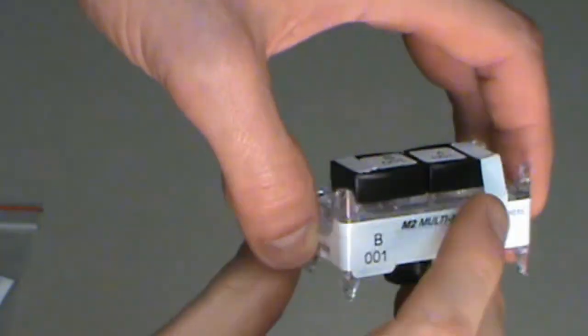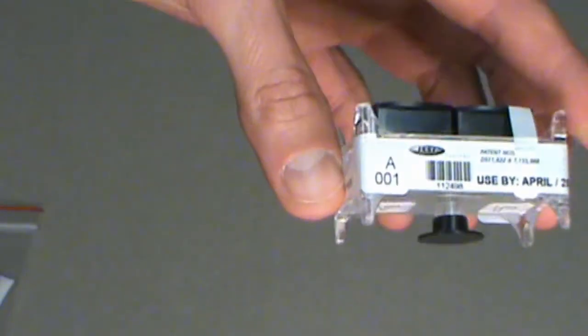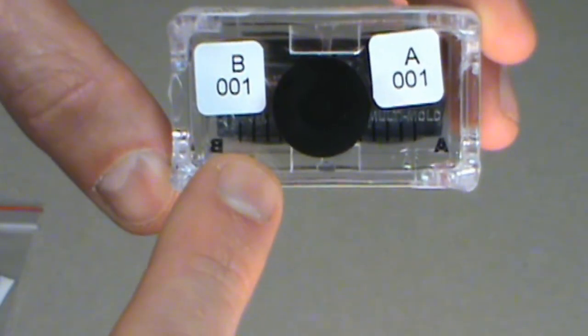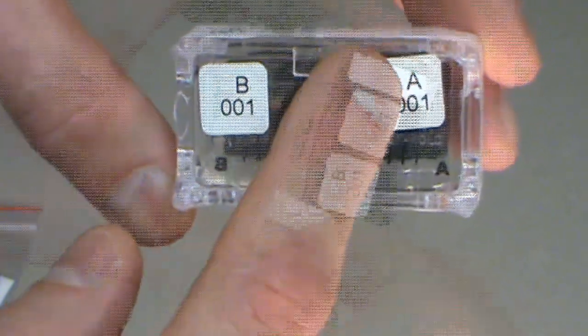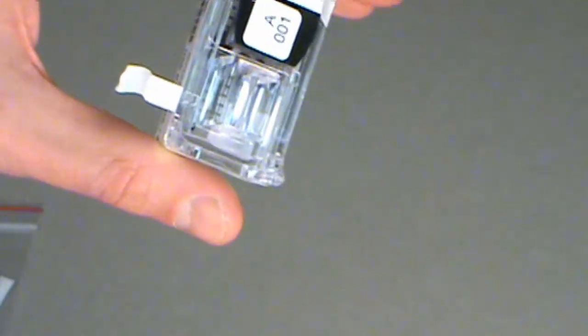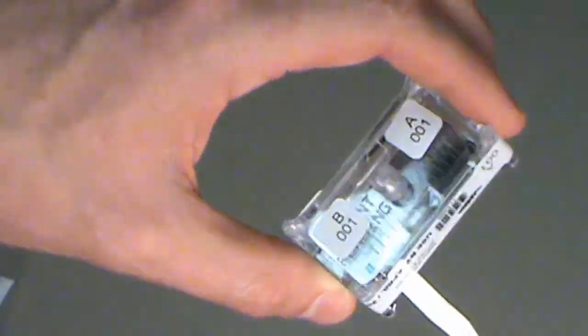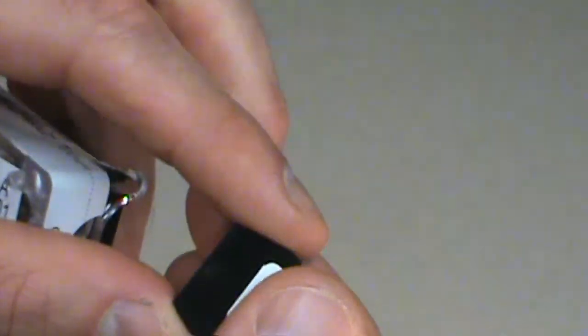You'll notice the mold cartridge has two caps on top, allowing you to collect two air samples with one cartridge. I have this cartridge covered in labels to help distinguish side A from side B. Remove one of the top caps as well as the back cap.